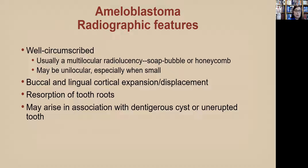Radiographically it's well circumscribed, usually a multilocular radiolucency, though smaller early lesions may be unilocular. These multilocular radiolucencies can be soap bubble or honeycomb in appearance. The growth pattern is buccolingual, and it can resorb or displace the roots of teeth. It can also arise in association with an impacted tooth, so the differential diagnosis could include something like a dentigerous cyst.